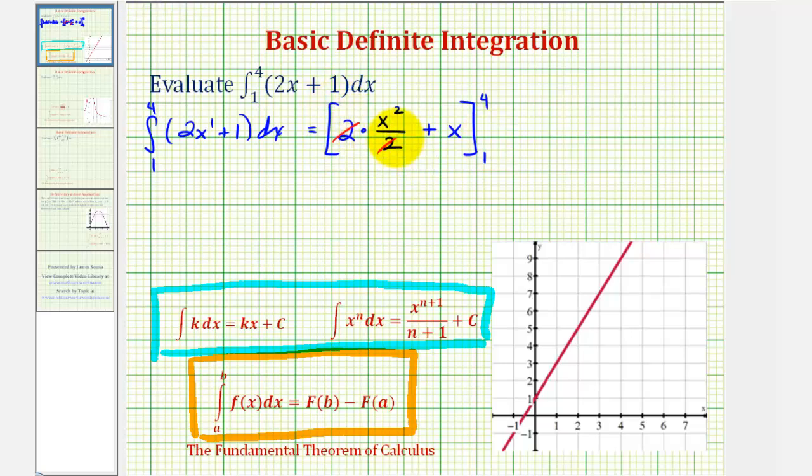Notice here, we have a two over two. That would simplify to one. So now, we just have X squared plus X.